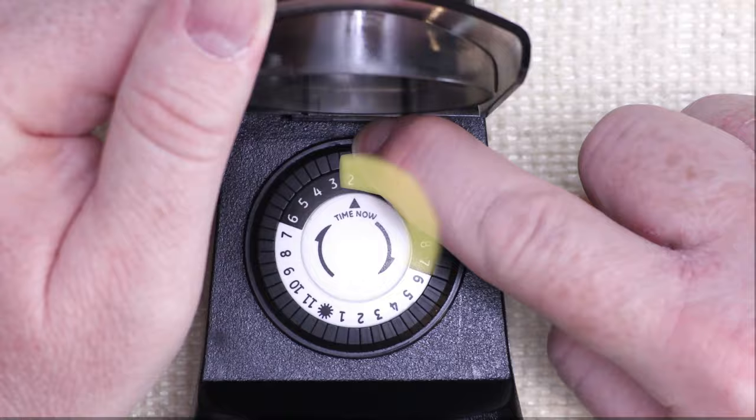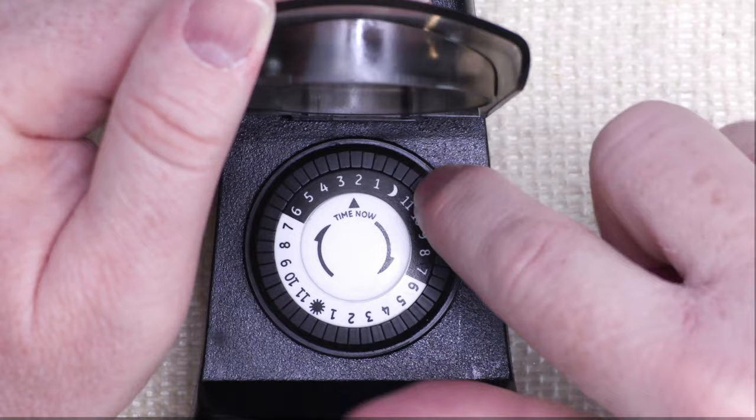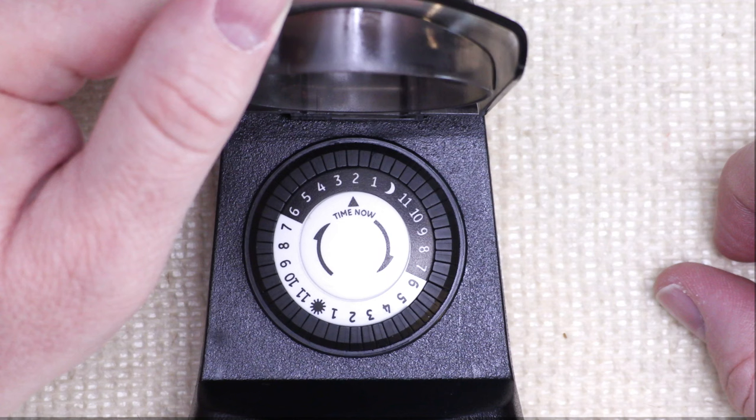I'm using this for my outdoor Christmas lights, so that's the time that my Christmas lights will be on. They'll be on from 6 p.m. and then they'll turn off at 2 a.m. It's also important to note that every notch represents a half an hour.